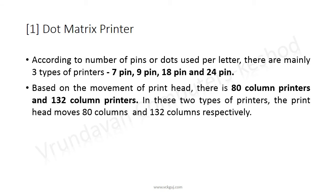An 80-column printer prints 80 characters per line, and a 132-column printer prints 132 characters per line. In these two types of printers, the print head moves 80 columns and 132 columns respectively.